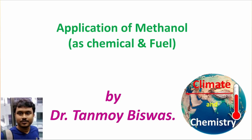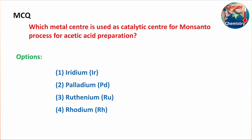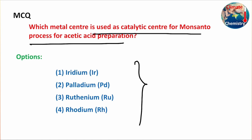Dr. Tanmay Biswas welcomes you all to the channel Climate and Chemistry. Today's topic is the application of methanol as both a chemical and a fuel. But first, a question: which metal center is used in the catalytic process like the Monsanto acetic acid process? Four options are provided — please write your answer in the comment box, and at the end of the discussion the right answer will be given.